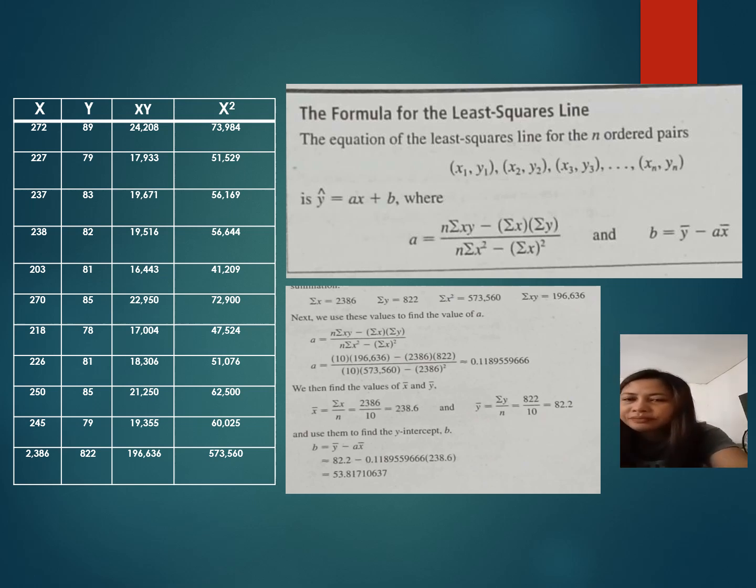And this is the formula. Next, we use these values to find the value of A. A equals 10 times 196,636. Ten is from the total number of our x. Then you can use the calculator to find the values of x and y.